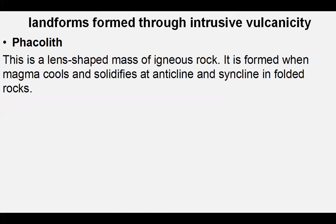The last intrusive feature is a phacolith. This is a lens-shaped mass of igneous rock. It is formed when the magma cools or solidifies along both anticlines and synclines in the folded rocks.